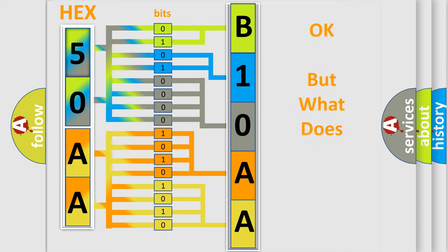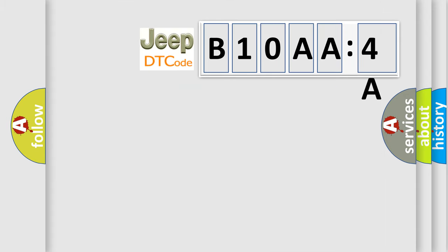The number itself does not make sense to us if we cannot assign information about it to what it actually expresses. So, what does the diagnostic trouble code B10AA4A interpret specifically, Jeep car manufacturers?